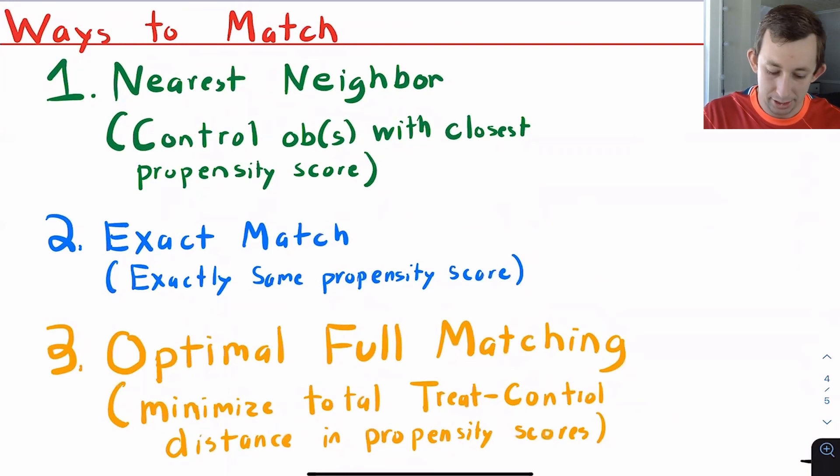You can do optimal full matching where you say, okay, the difference between Bill and Esther is zero. And you go through all those pairs that we had above, you calculate the difference between the propensity score of the treatment and the control person, you add those all up, and you try to minimize that total number.